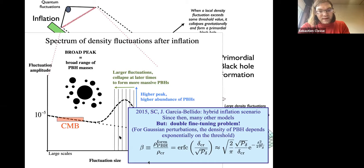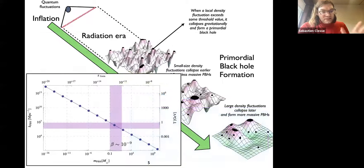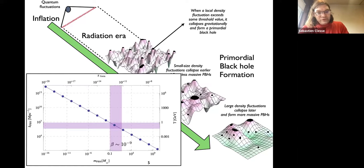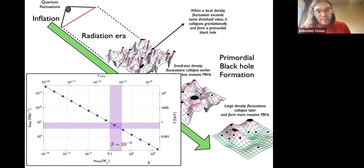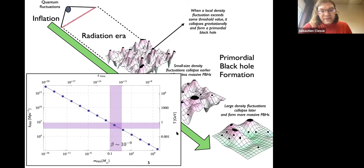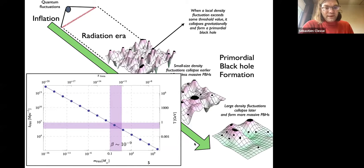There is kind of a double fine-tuning problem, because you need to locate your peak where you would like to have your PBH mass — for instance 30 solar mass black holes if you think of LIGO-Virgo observations — and you need also to tune the amplitude of the peak. I will just give the connection between the mass of the primary black holes, the redshift of formation, the scale corresponding to the inhomogeneity that collapses, and the temperature at which it re-enters inside the horizon. Typically when you think of solar mass black holes you are thinking of the QCD phase transition, and if you think of planetary mass black holes, it's more like the electroweak transition.